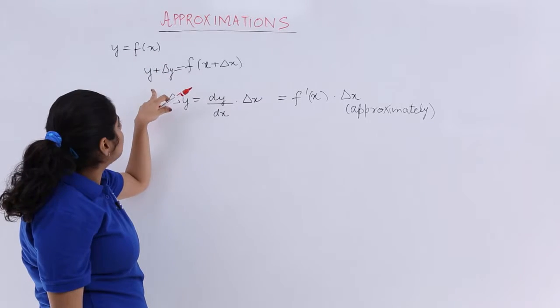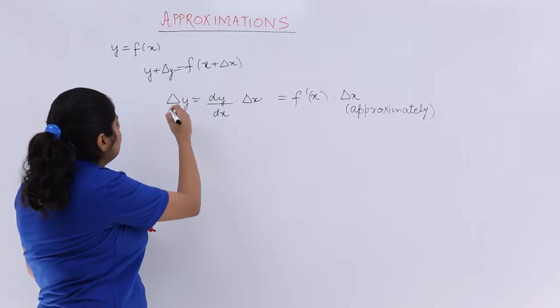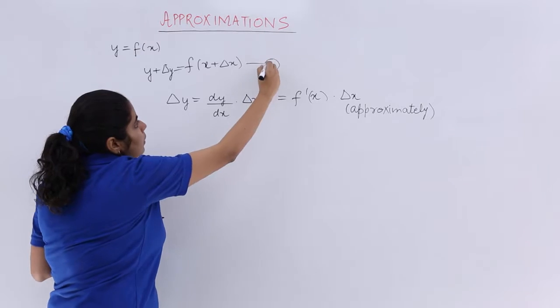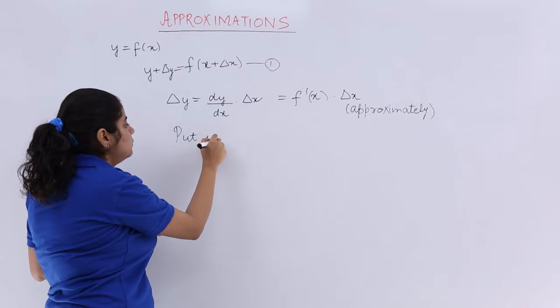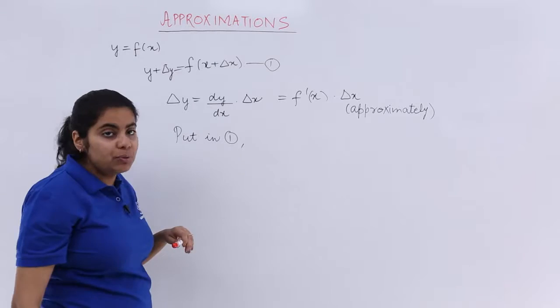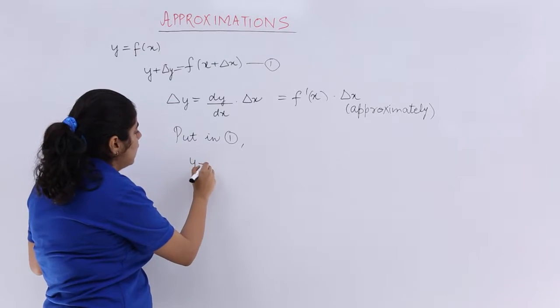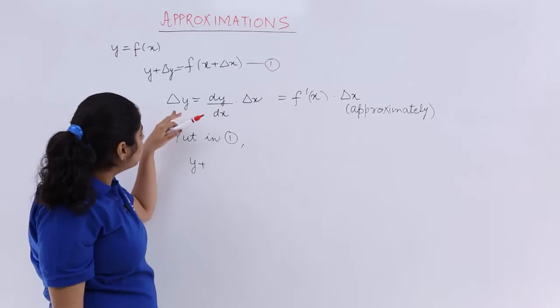Now y is equal to something called as this or indirectly I can write, if this is the equation number 1, then I can put it in 1 and what do I get? I get y plus I get del y.